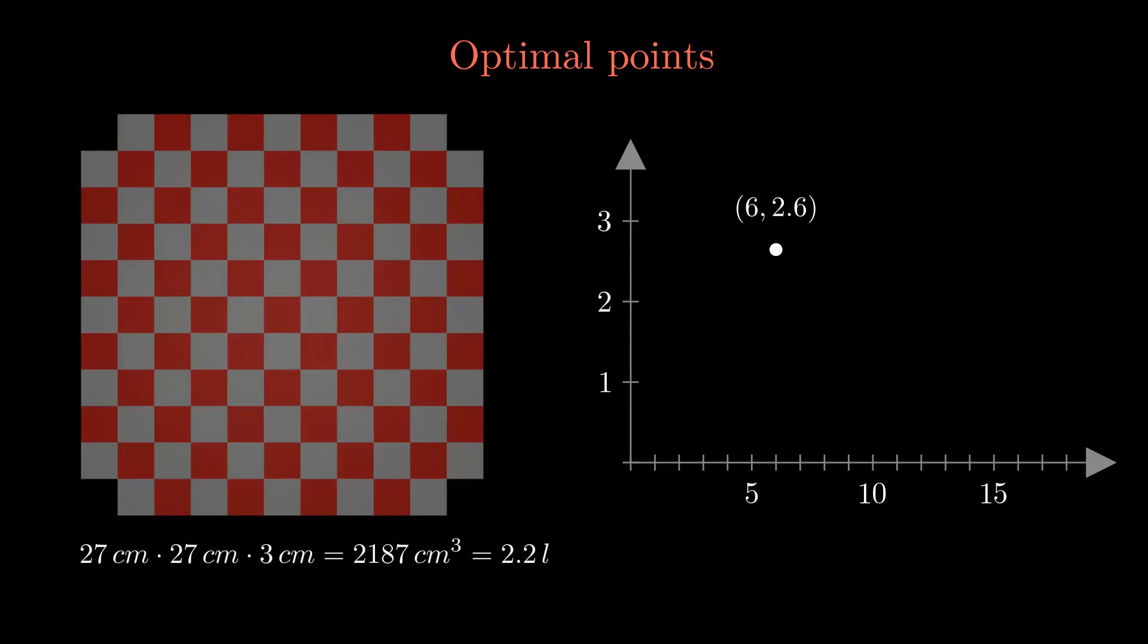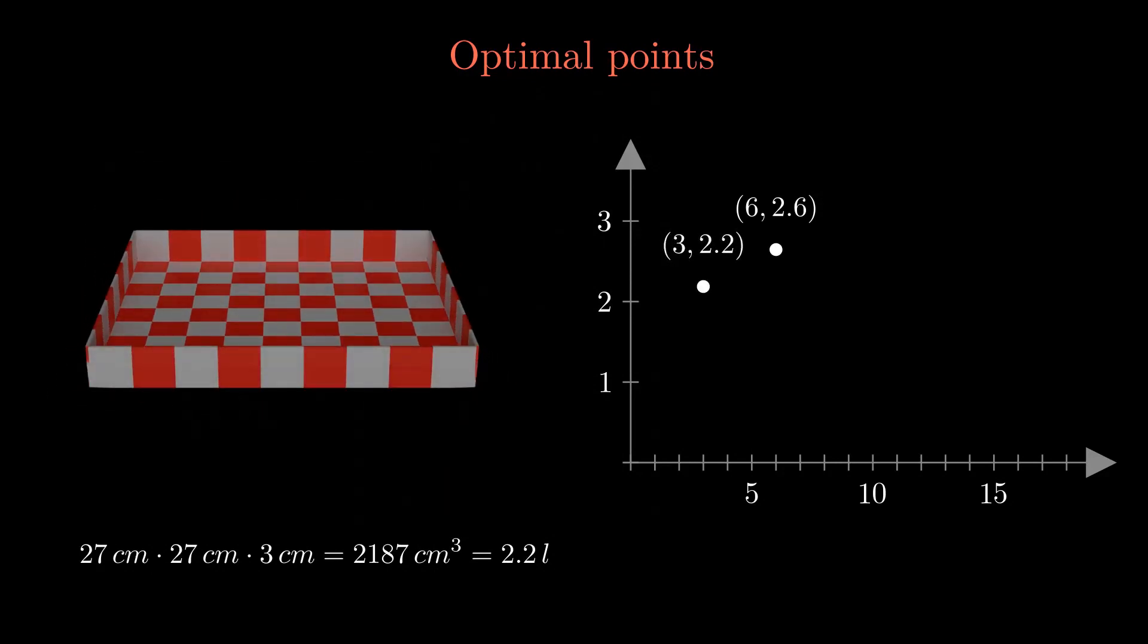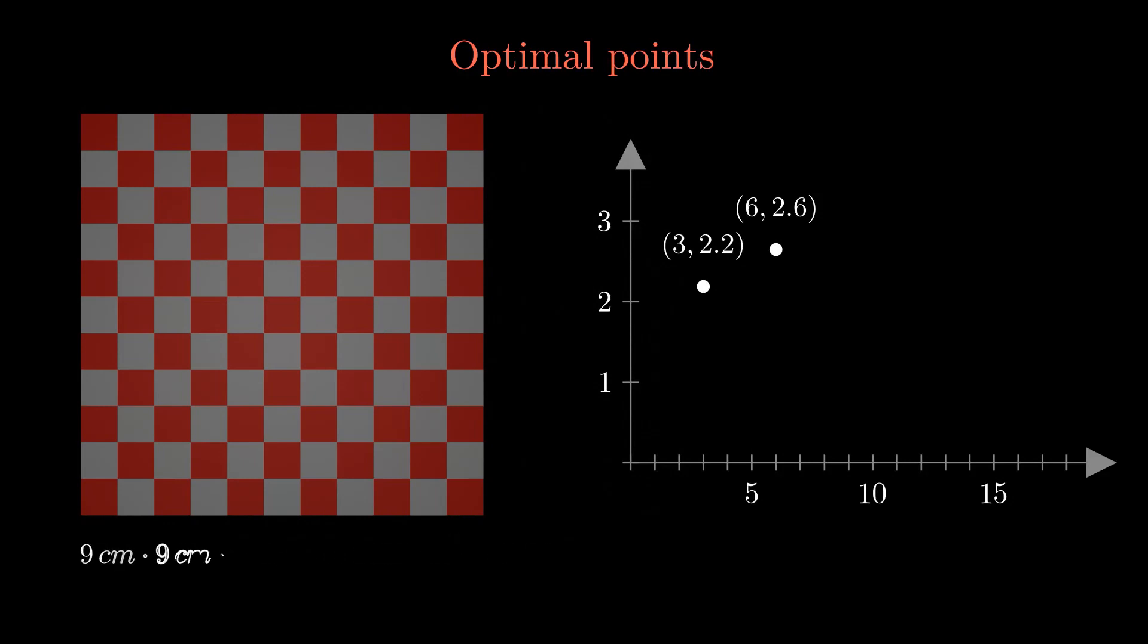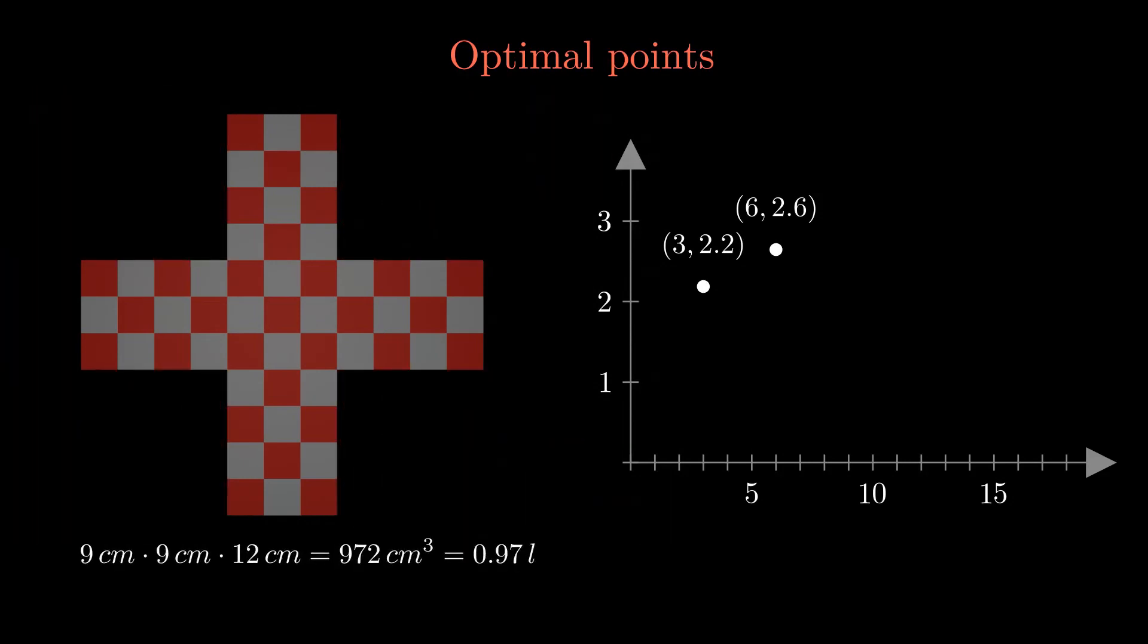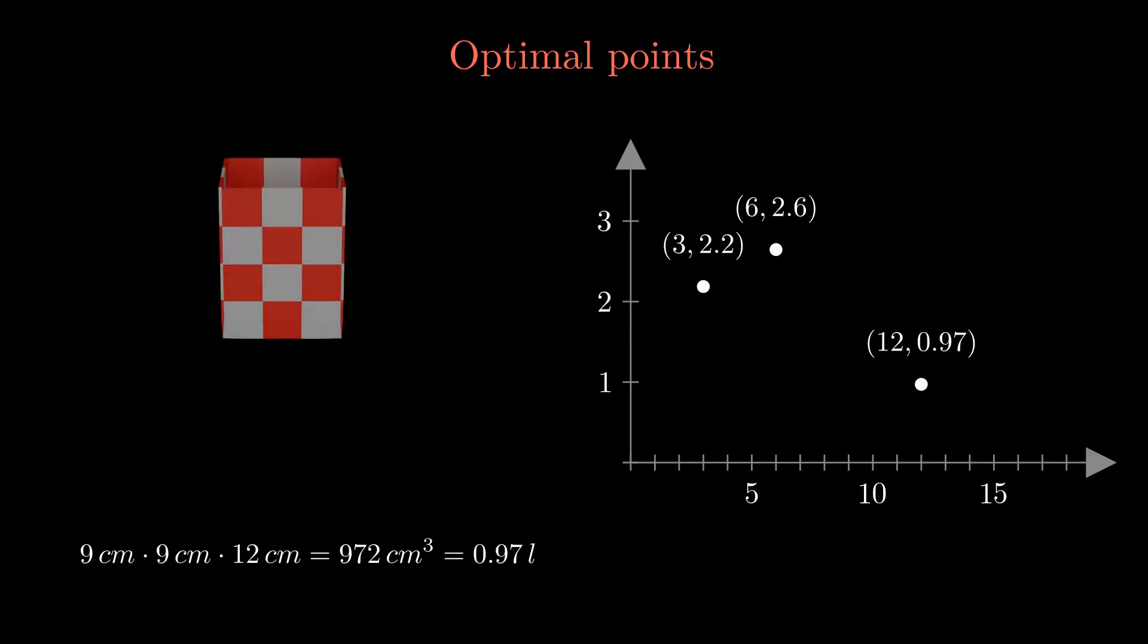For two more different corner pieces, the volume is calculated and the values are shown in the diagram. From these examples, it seems that the largest box can be obtained for about 6 cm. The precise value can be worked out with calculus.